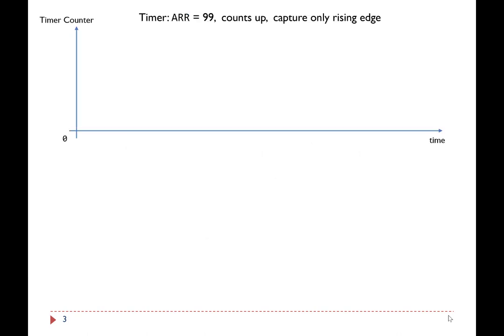Suppose the auto-reload register ARR is set to 99. The timer counts up, and it only captures rising edges of the external signal.